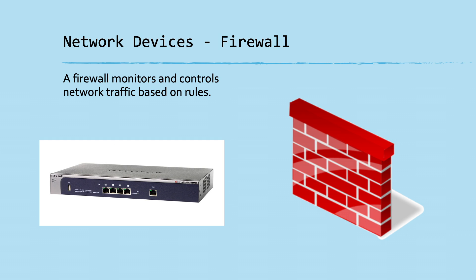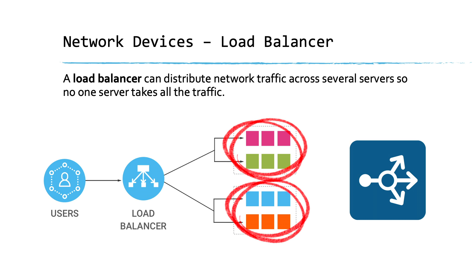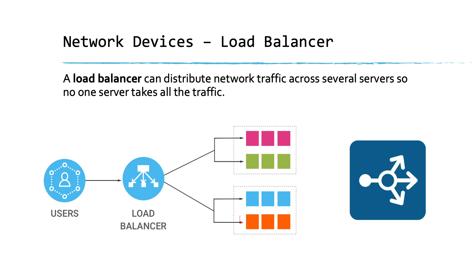Wireless access points, or WAPs, allow us to connect to a network wirelessly. Firewalls can be hardware or software — the hardware version is placed between routers and filters packets in and out of the network. Load balancers distribute network traffic across several servers so no one server takes all the traffic. For example, if a website can only handle 10,000 visitors at a time, a load balancer spreads traffic across multiple server instances to prevent any single server from becoming overwhelmed.